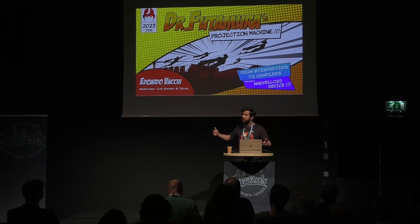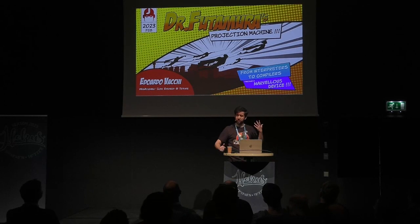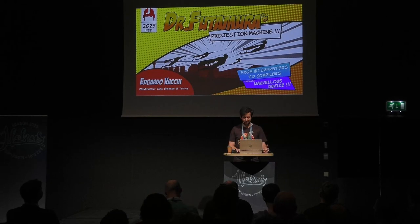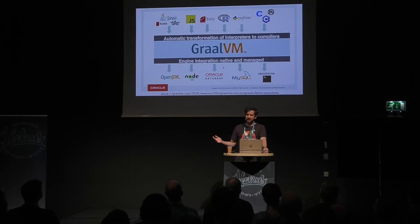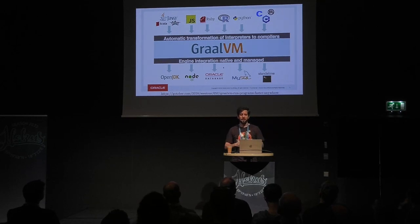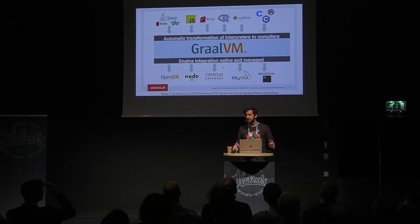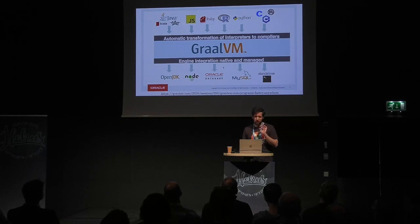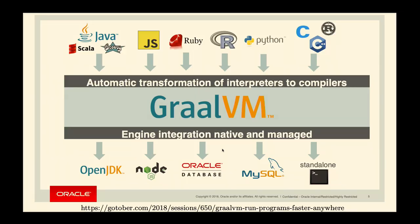Hello and welcome to Dr. Futamura's Projection Machine: From Interpreters to Compilers Through a Marvelous Device. GraalVM is an umbrella of different technologies, known mostly today for native image capabilities, but it's a lot more than that. It's a just-in-time compiler, and there's a project called Truffle that allows you to run on top of the JVM interesting languages — not just Java, Scala, or Groovy, but also JavaScript, Ruby, Python, even C and C++.